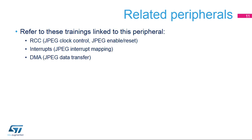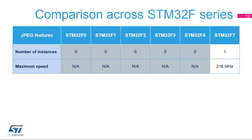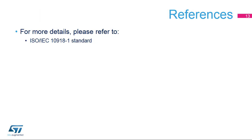You can refer to the training slides related to RCC, interrupts, DMA, and GPIO for additional information. The JPEG Codec is available in the STM32F7 series. For more details, please refer to the ISO IEC 10918-1 standard.